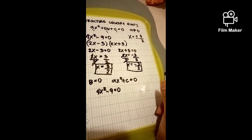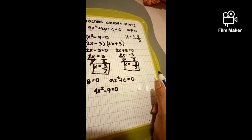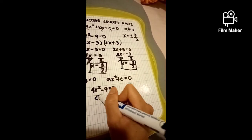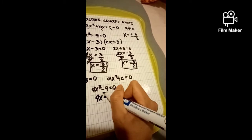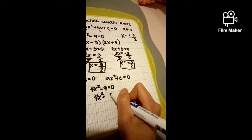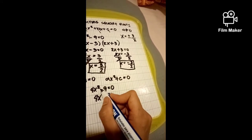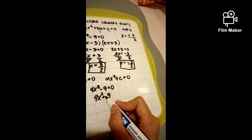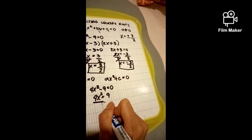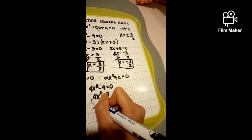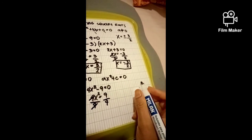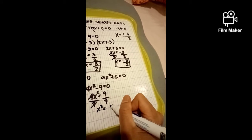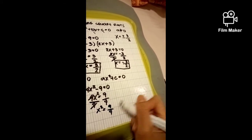Let's solve it using this alternative method. We need to isolate x squared. So, 4x squared equals 9 — the negative sign changes to positive when we transfer the 9 to the other side of the equal sign. Then we eliminate the 4 by dividing both sides by 4, giving x squared equals 9 over 4.